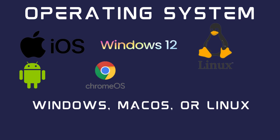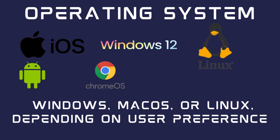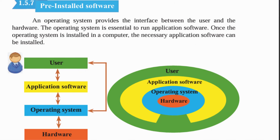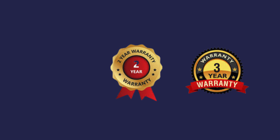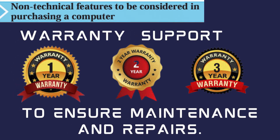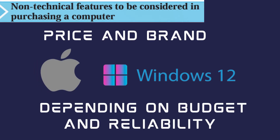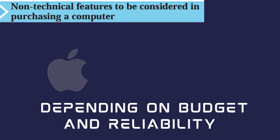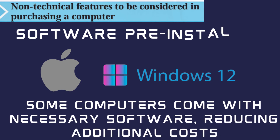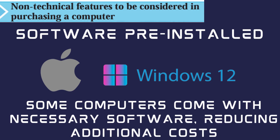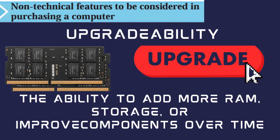The operating system — Windows, Mac OS, or Linux — depends on user preference. Apart from technical features, we must also consider warranty and support to ensure maintenance and repairs, price and brand depending on budget and reliability, software pre-installed as some computers come with necessary software reducing additional costs, and upgradability — the ability to add more RAM, storage, or improve components over time.